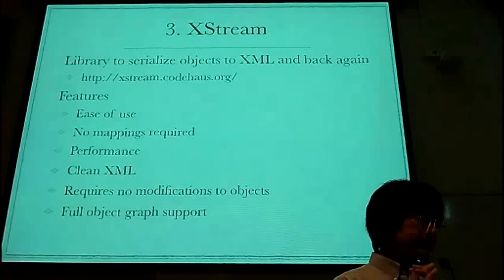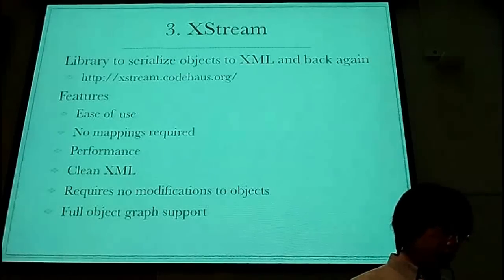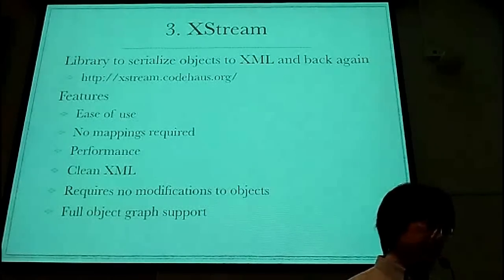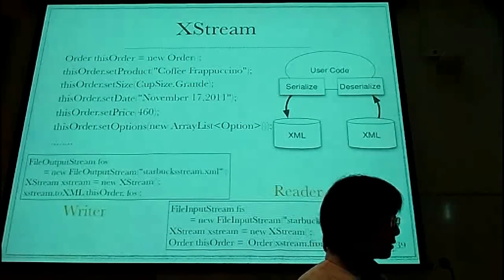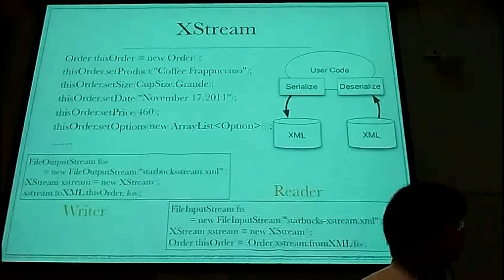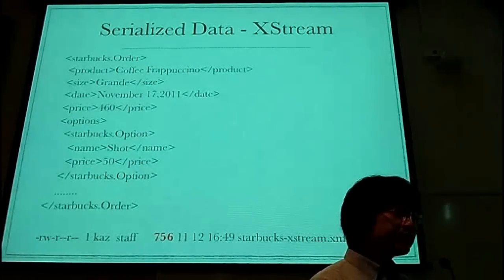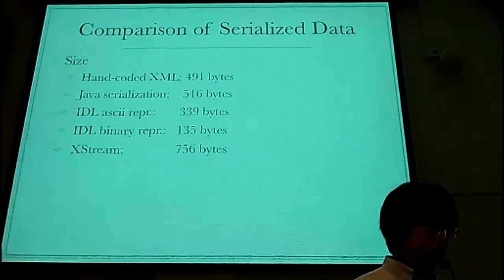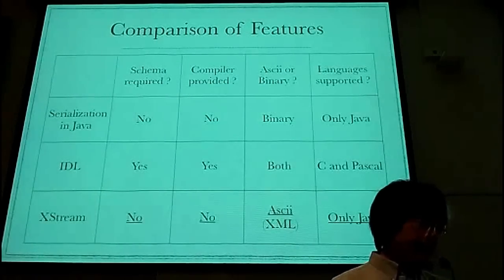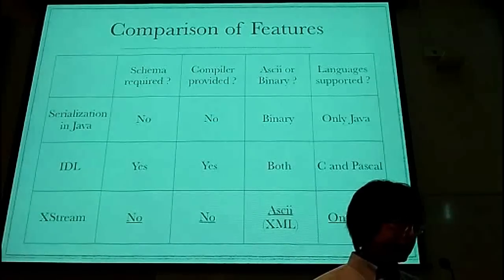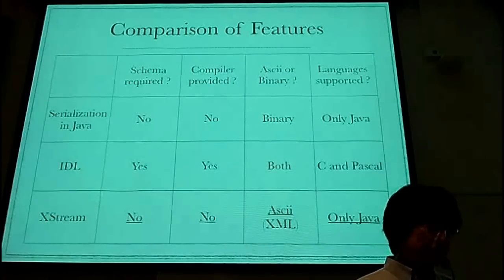The third one is XStream — a library to serialize objects to XML. It has many features: ease of use, no mappings required, performance, and clean XML. Here is the serialized XML data. The size is 756 bytes. Schema definition is not required, schema compiler is not provided, XML is provided, and only Java is supported.